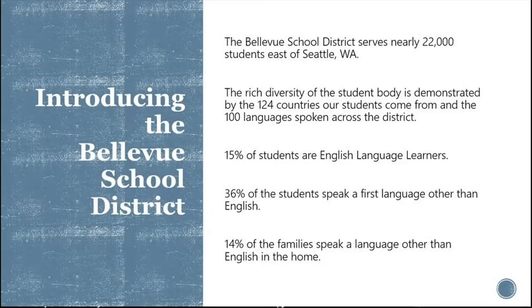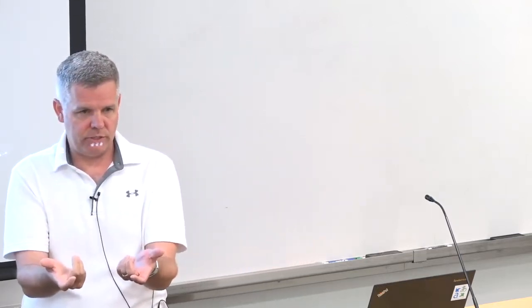The Bellevue School District is just west of here, east of Seattle. We serve approximately 22,000 students in grades K through 12. We call ourselves a diverse district, but our diversity looks different from other districts. At the end of last school year, we served students from 124 different countries of origin, and our students spoke 100 different languages at home.